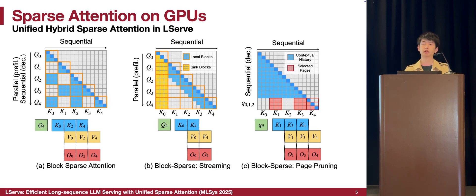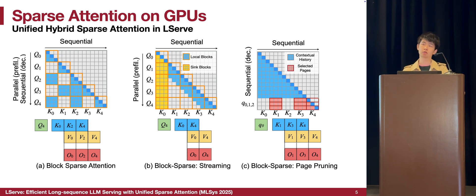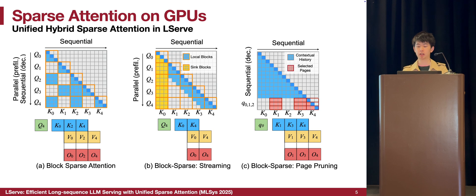LSER unifies different kinds of sparse attention patterns, such as unified hybrid sparse attention, within the framework of block sparse attention. For example, figure B demonstrates the streaming attention — also called the streaming head — which only looks into the very first few sink tokens and local tokens for the attention computation. On the right-hand side, we showcase dynamic sparsity in the decoding stage, which means we skip less important KV pages based on our page pruning algorithm with regard to the current query token.